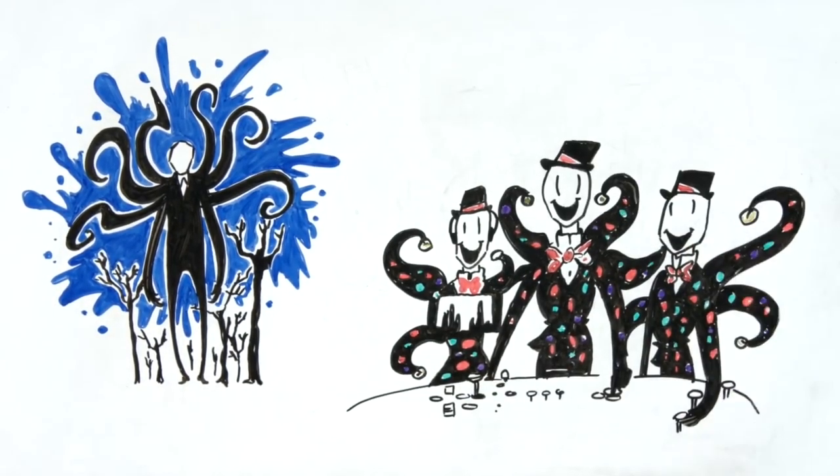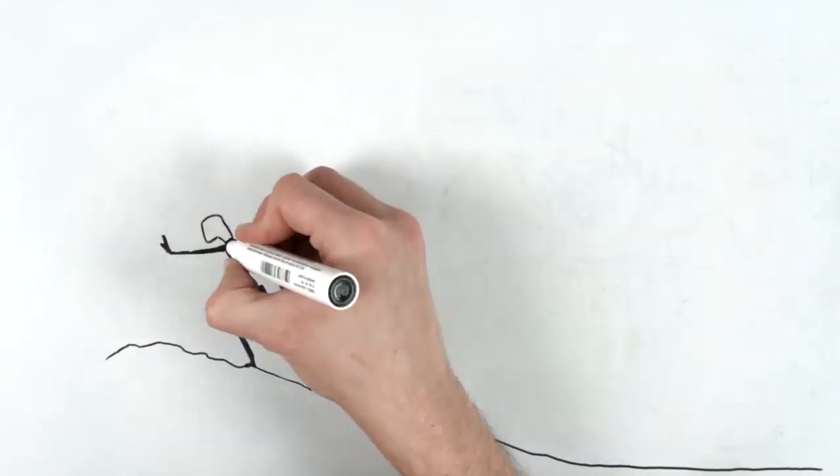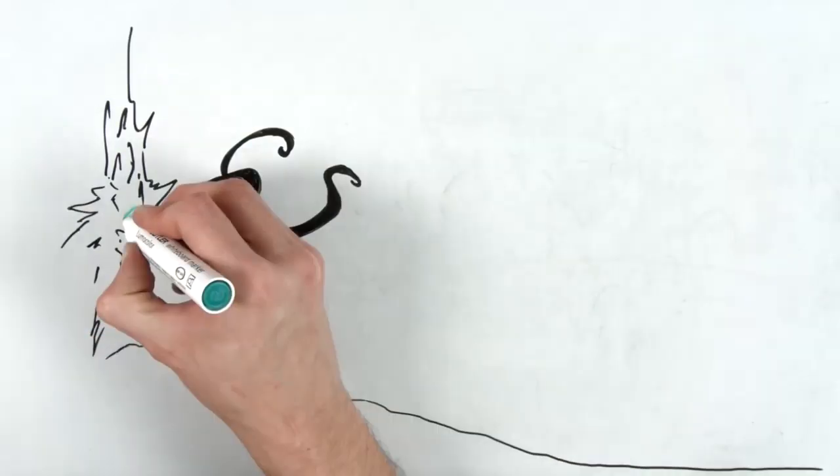But one of them got fed up of all the positivity. Darkness and violence got hold of him. And he opened the portal to a world where he could strike fear and chaos.